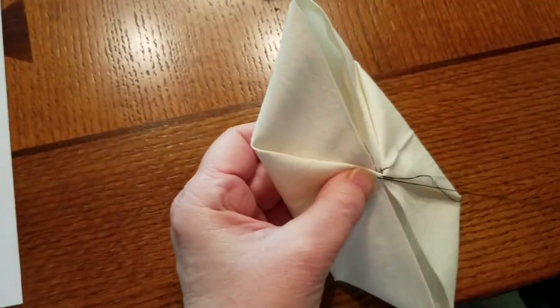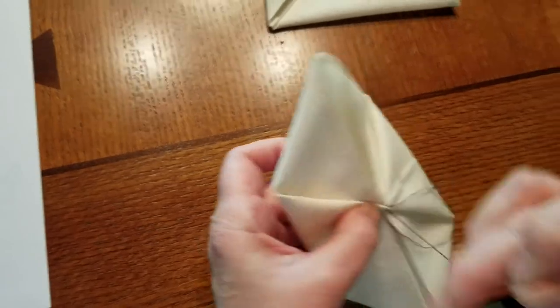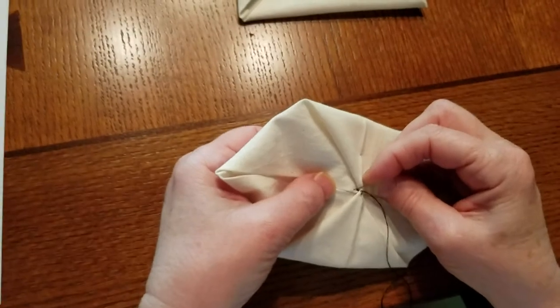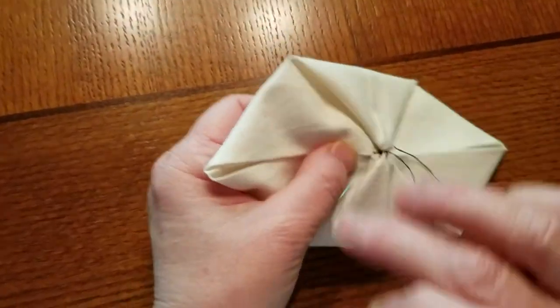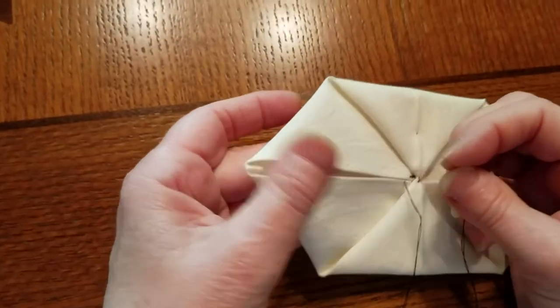And all this can be done without having to knot a thread if you start with a long enough thread. And then what I'm going to do is I'm going to start here. And I'm going to use small stitches, a little running stitch, and then go all the way out to the corners.